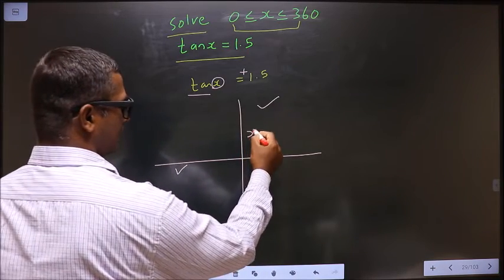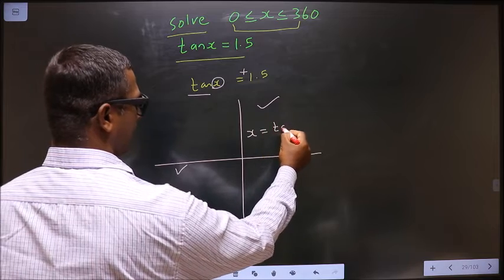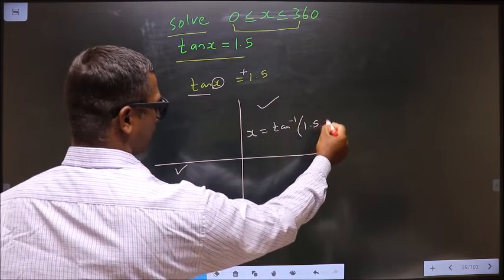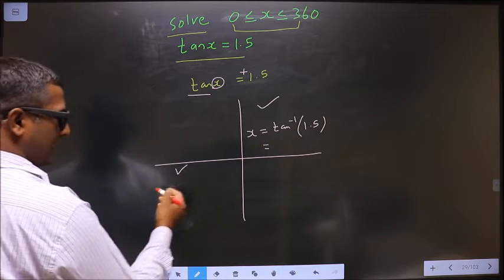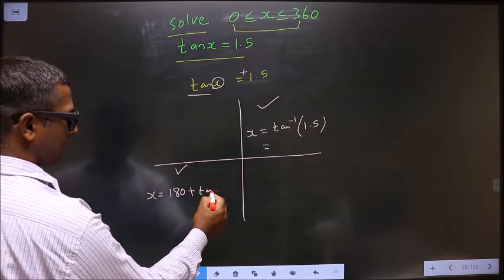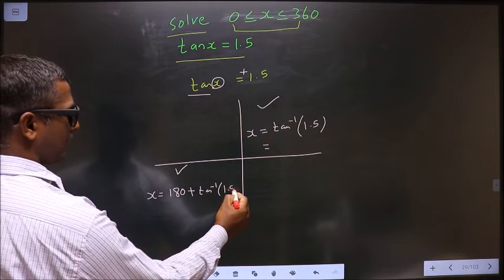So to get an angle in the first we do directly tan inverse 1.5. To get an angle in the third we should do 180 plus tan inverse 1.5.